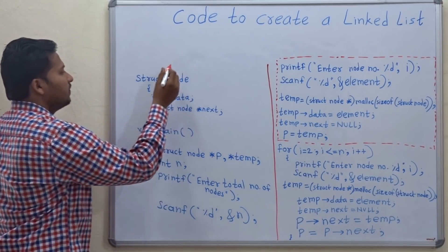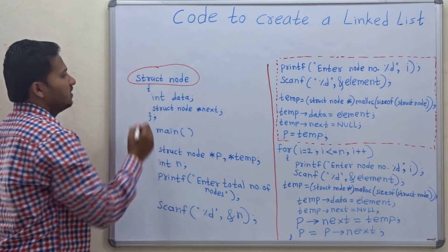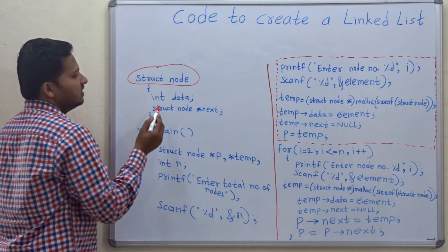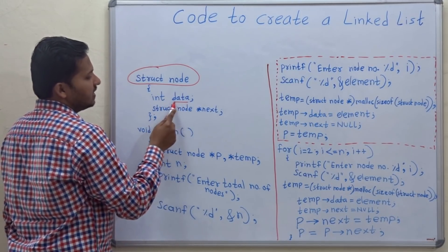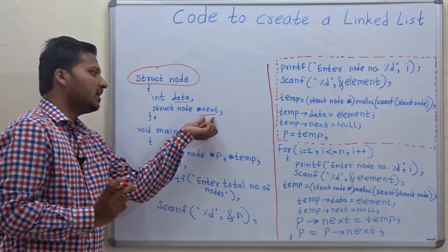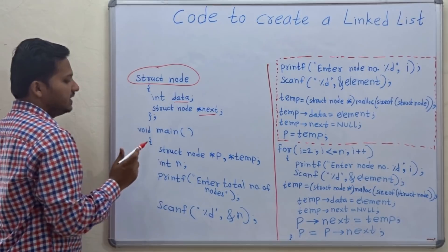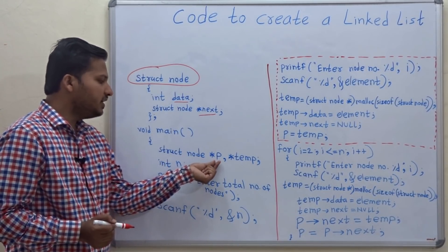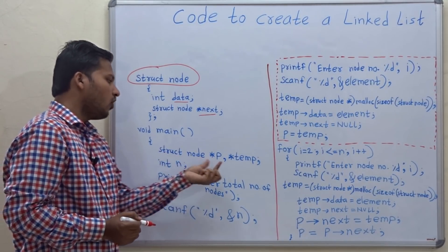For creating a linked list we first define a structure, and the name of the structure is 'node'. Inside the structure there are two elements: 'data' and the 'next' pointer, which holds the address of the next node in the linked list. Inside the main function you have to declare some pointers of data type struct node for using these pointers in the program.